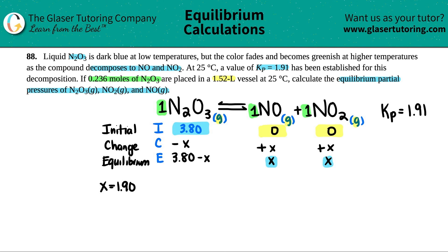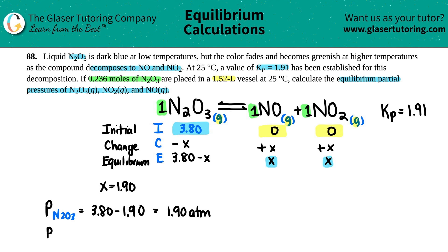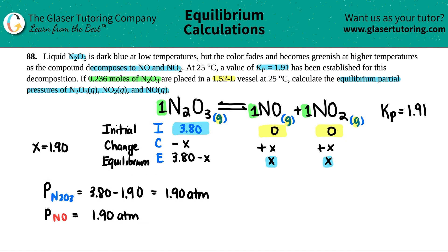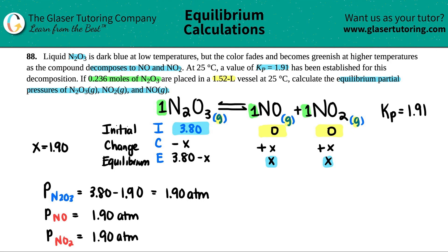Now we can find all the equilibrium partial pressures. The pressure of N2O3 was 3.80 minus X, which is 3.80 minus 1.90, equals 1.90 ATM. The pressure of NO was just X, which equals 1.90 ATM. And the pressure of NO2 was also X, which equals 1.90 ATM.